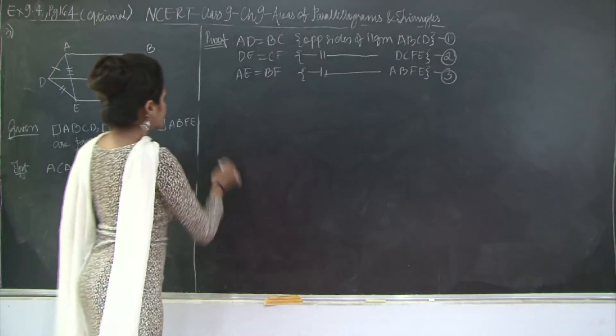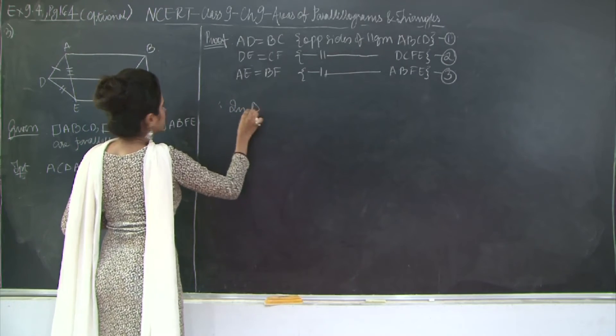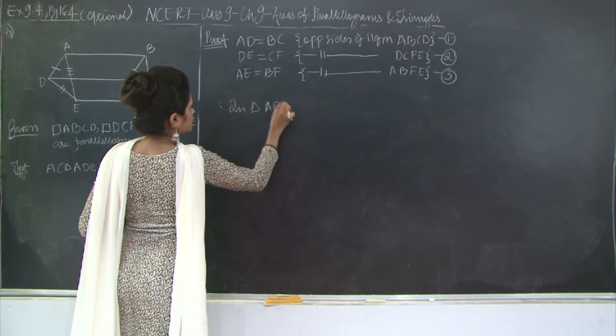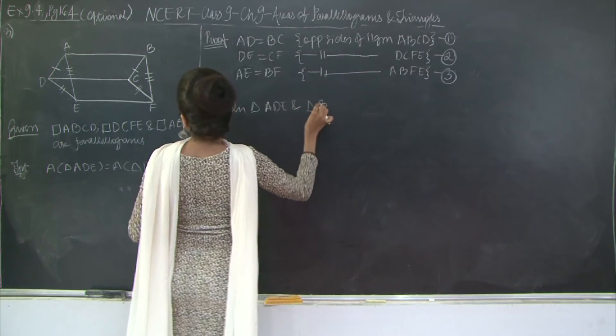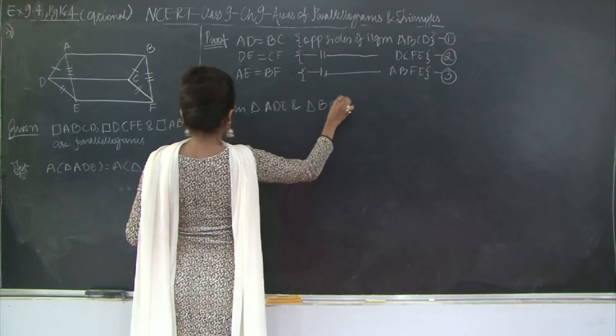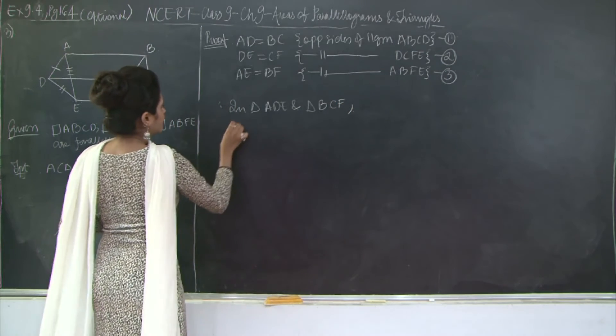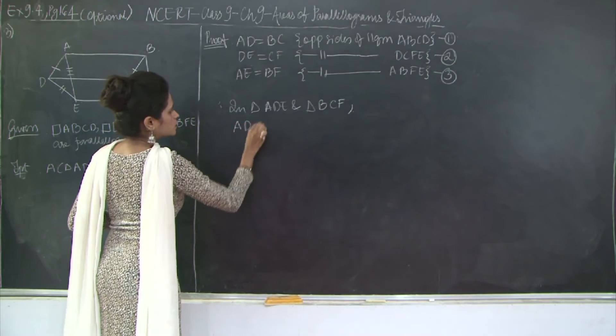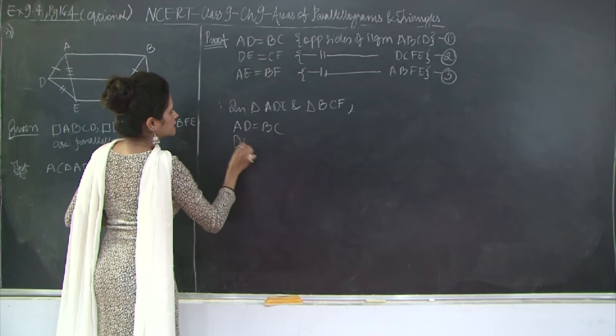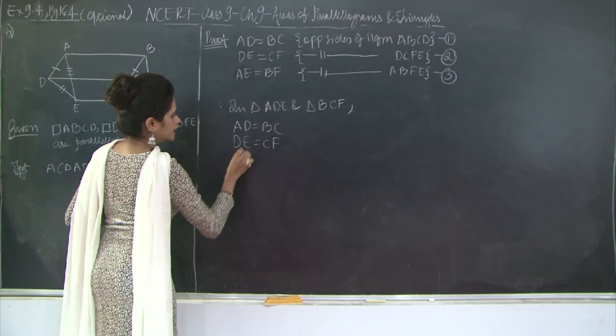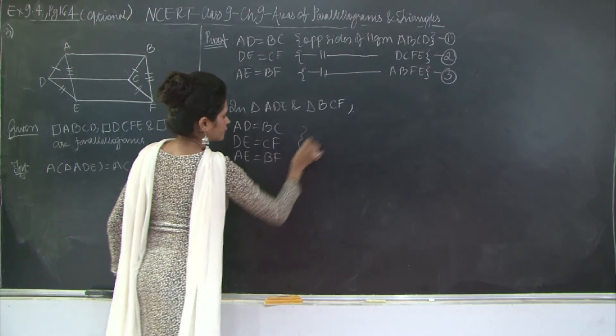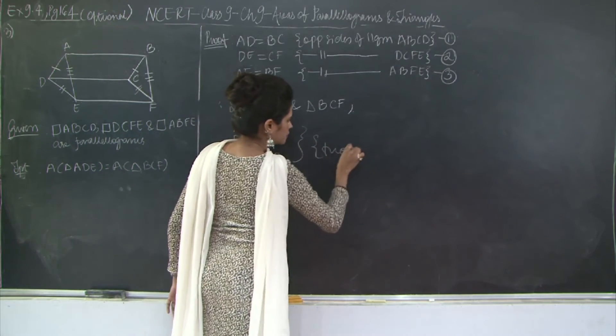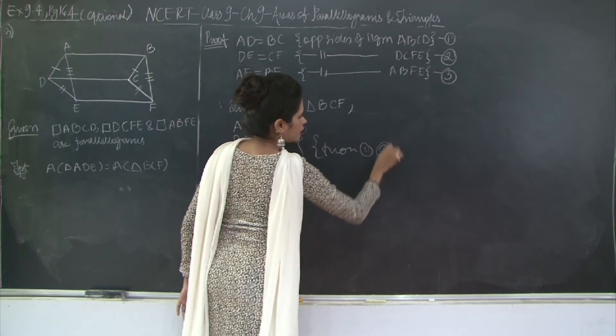Therefore, in triangle ADE and BCF, triangle BCF, I have AD is equal to BC, DE is equal to CF, AE is equal to BF from 1, 2, and 3.